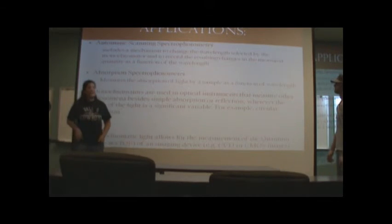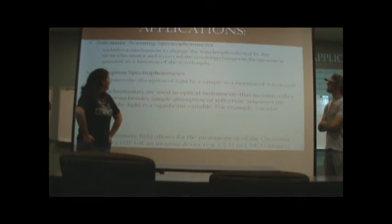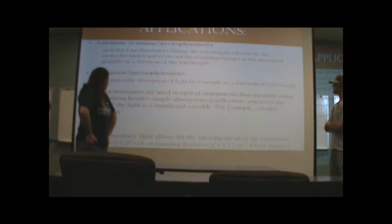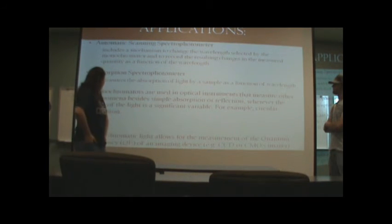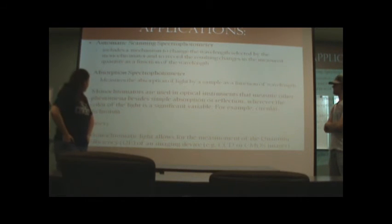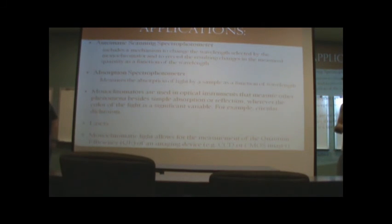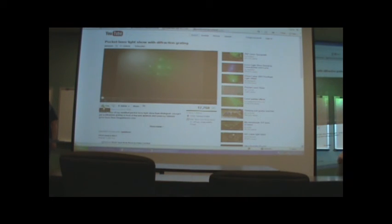There are different applications for the monochromator. Most of them are for spectrophotometers, such as the automatic scanning spectrophotometer and the absorption spectrophotometer. Monochromators are also used in optical instruments that measure other phenomena besides simple absorption or reflection, wherever the color of the light is a significant variable. For example, the circular dichroism, they're also used in lasers. And monochromatic light allows for the measurement of the quantum efficiency of an imaging device. And here's just a little examples of lasers with diffraction grading.